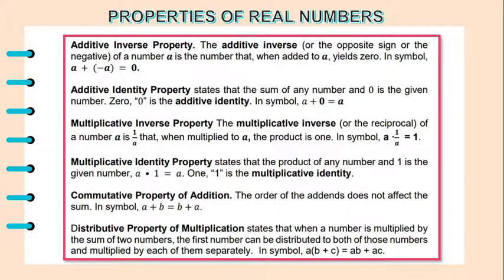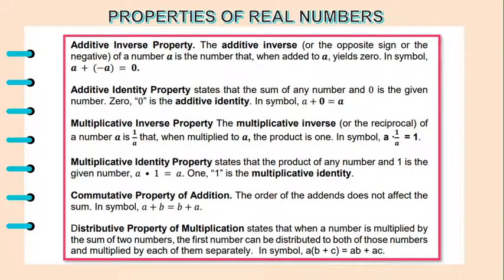We also have the commutative property of addition: the order of the addends does not affect the sum. In symbol, a plus b is equal to b plus a. And the distributive property of multiplication states that when a number is multiplied by the sum of two numbers, the first number can be distributed to both and multiplied by each separately. In symbol, a times the quantity b plus c is equal to ab plus ac.